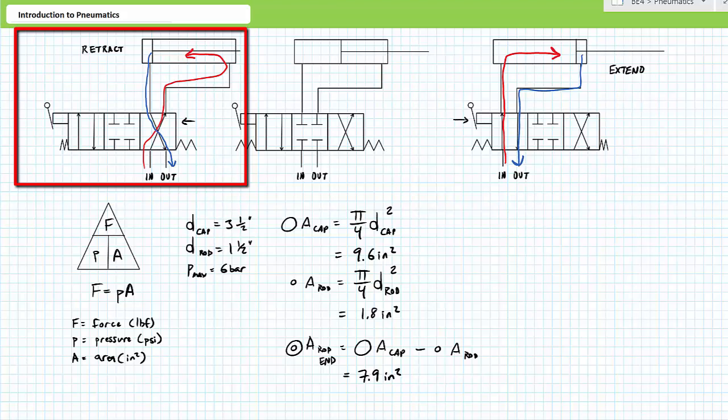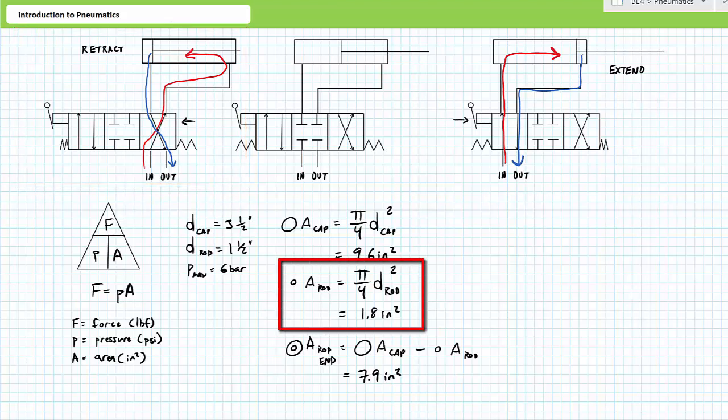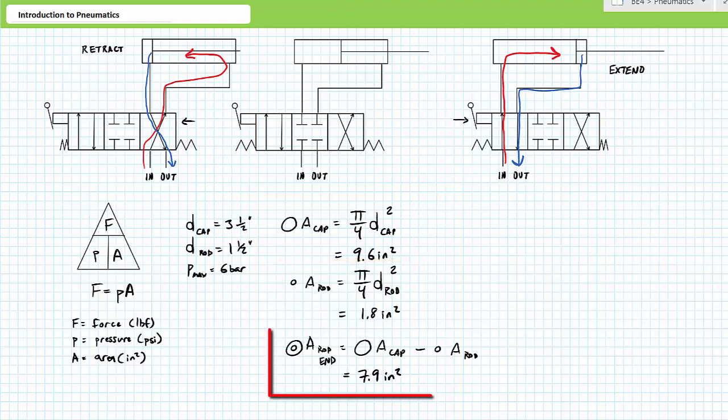Retraction necessitates pressurized fluid enter the rod end port and the cap end port be exhausted at low pressure. During retraction, pressurized fluid acts on the ring-like angular surface area within the rod end. The area of the rod is equal to π/4 times the diameter of the rod squared. Substituting in our given values results in a rod area of roughly 1.8 square inches. The ring-like rod end area is equal to the area of the cap minus the area of the rod. Substituting in our calculated values results in a rod end area of roughly 7.9 square inches.